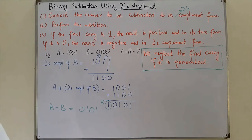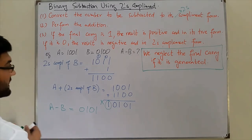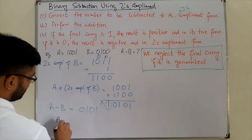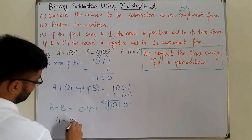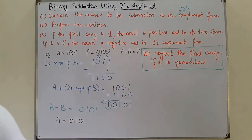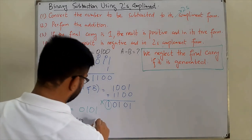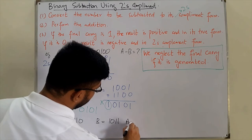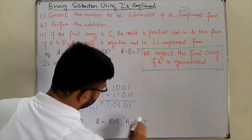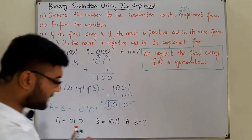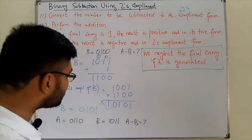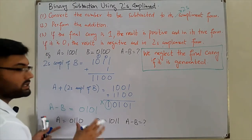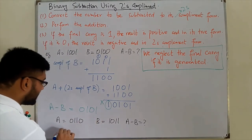Now for another example: A is 0110 and B is 1011, and we need to find A minus B. We'll use the two's complement method again.